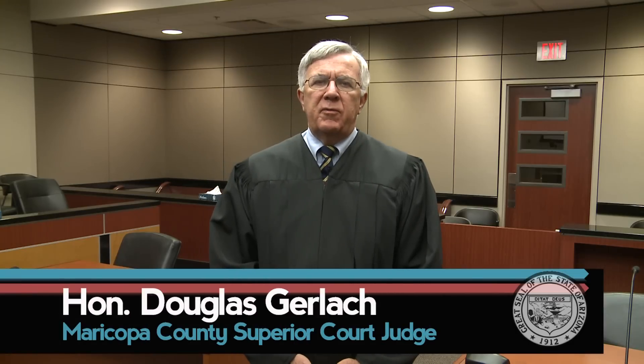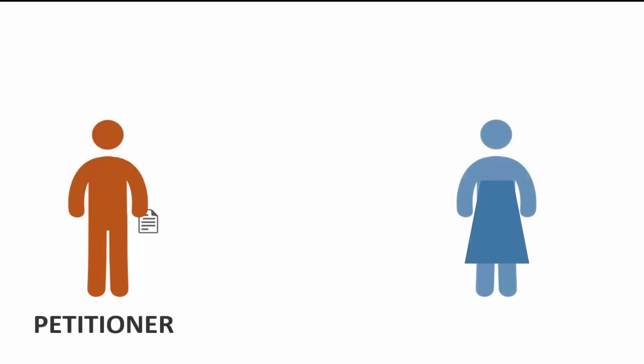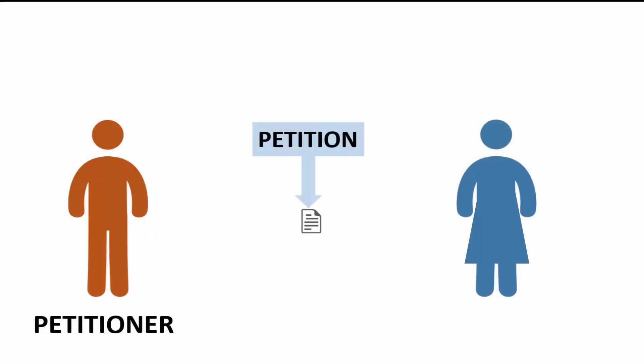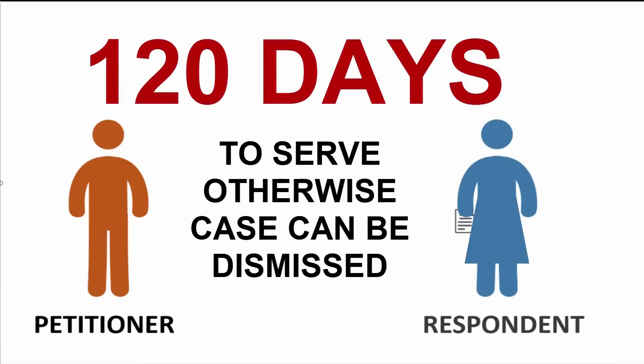Every case starts when someone files a petition. The person who filed the petition is called the petitioner and is required to serve the petition on the other side, who is called the respondent. The service must happen no later than 120 days from when the petition was filed. If service does not occur within these 120 days, the court can dismiss the case. The petitioner must arrange for the service to happen.